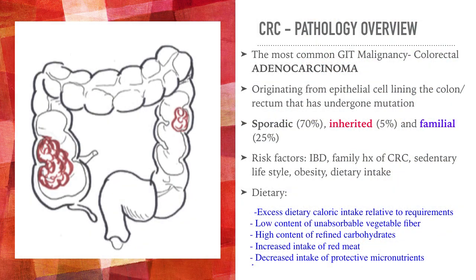The most common GIT malignancy is colorectal adenocarcinoma. This cancer originates from epithelial cell lining of the colon or rectum that has undergone mutation. 70% is sporadic, meaning that it is related to point mutations to the APC gene. 5% is inherited, meaning mutation at one allele of the inherited mutated gene, and 25% is familial, which is related to inherited but cannot be included in the inherited cancer variant.